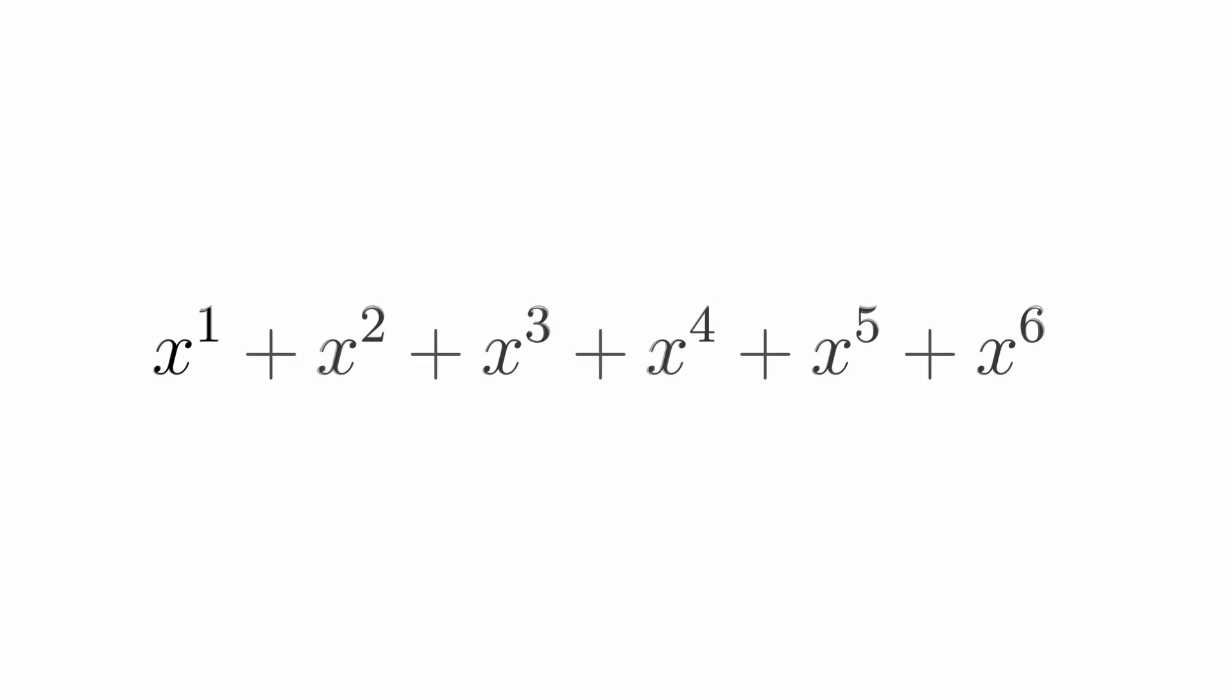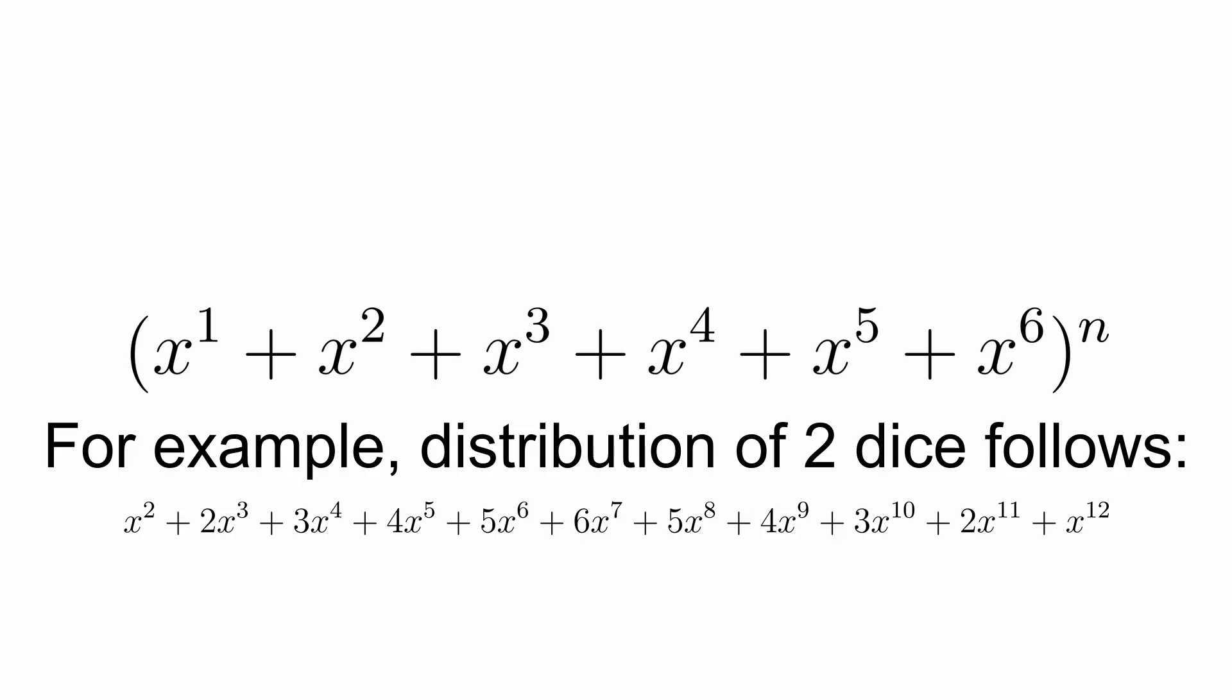What's amazing is that it's still a generating function, and if we care about the sum of n roles, we can simply exponentiate x plus x squared plus x cubed plus x to the 4th plus x to the 5th plus x to the 6th. The coefficients will tell you how many ways you can get your sums. And generating functions can even do better.